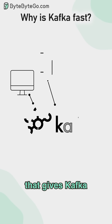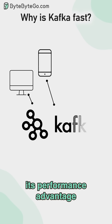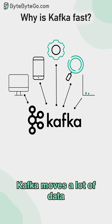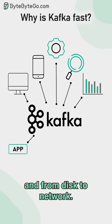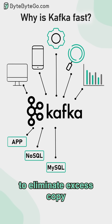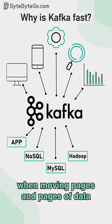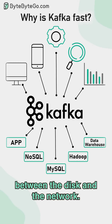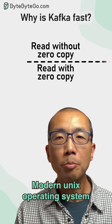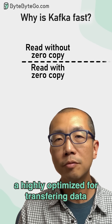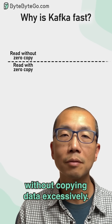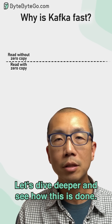The second design choice that gives Kafka its performance advantage is its focus on efficiency. Kafka moves a lot of data from network to disk and then from disk to network. It is critically important to eliminate excess copy when moving pages and pages of data between the disk and the network. This is where the zero copy principle comes into the picture. Modern Unix operating systems are highly optimized for transferring data from disk to network without copying data excessively.